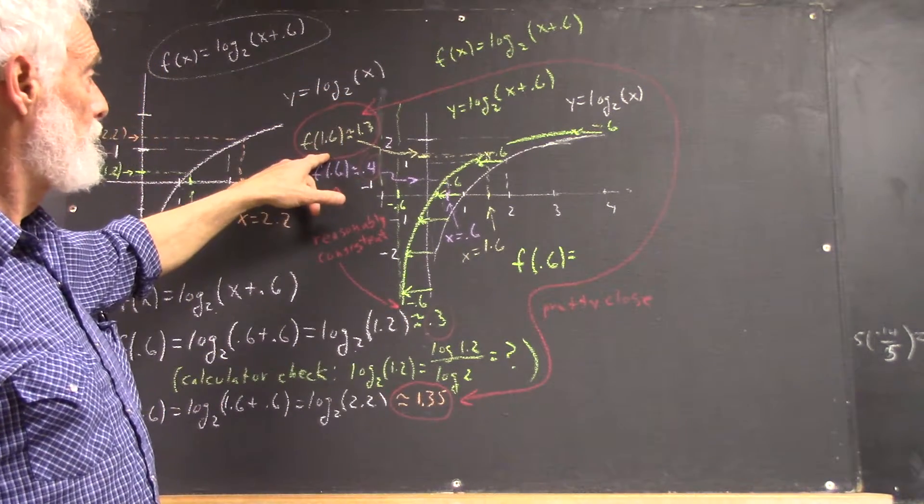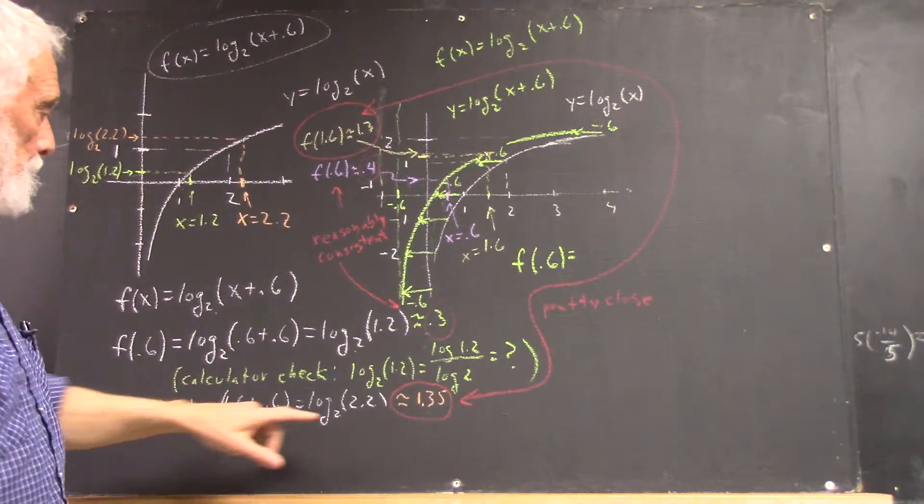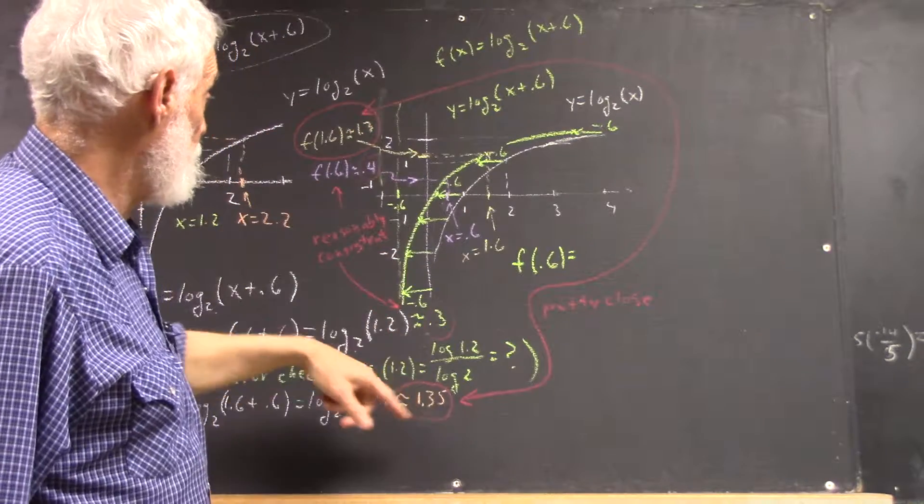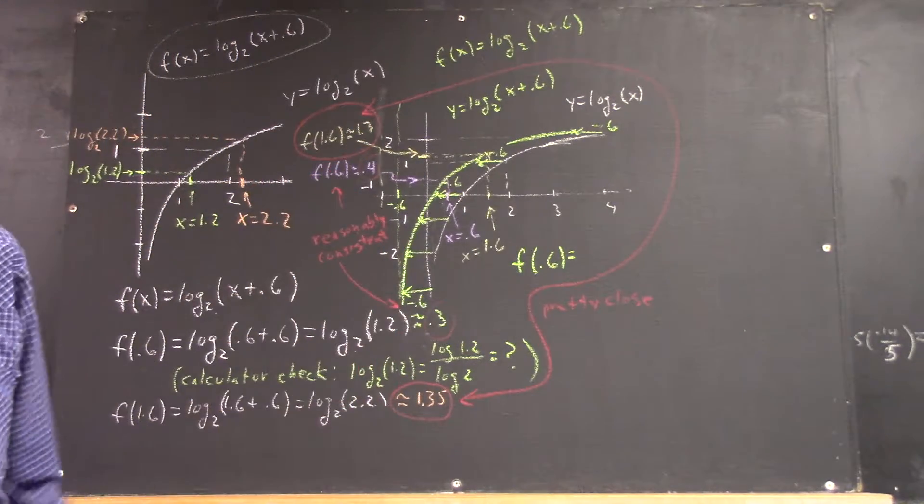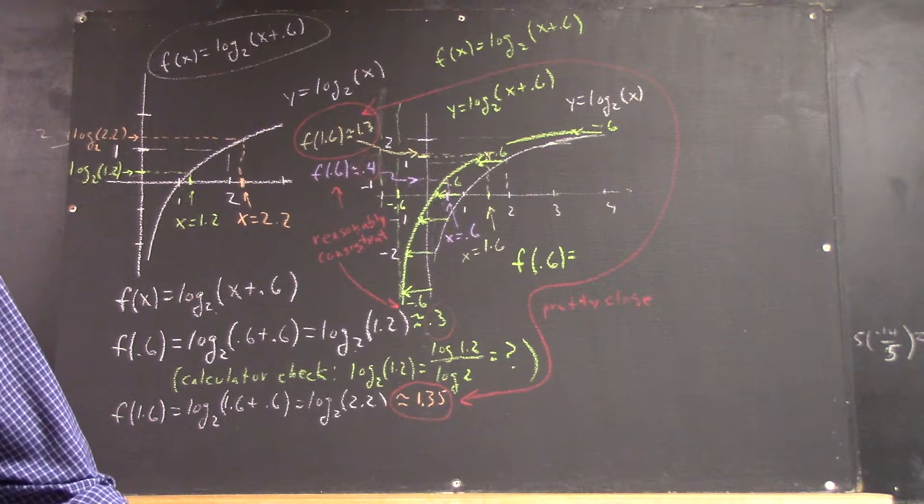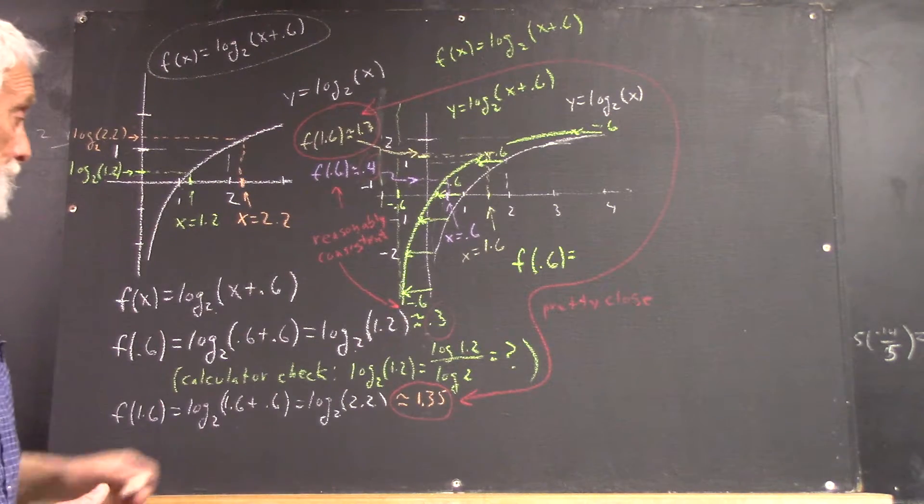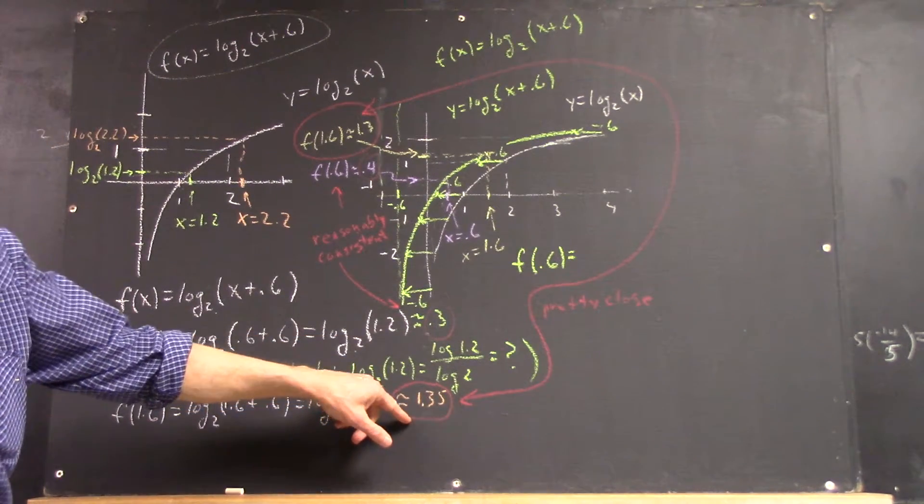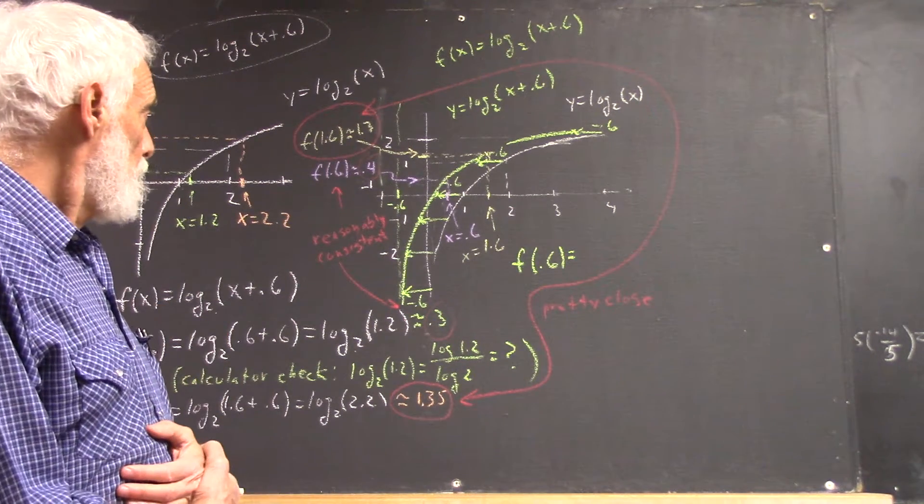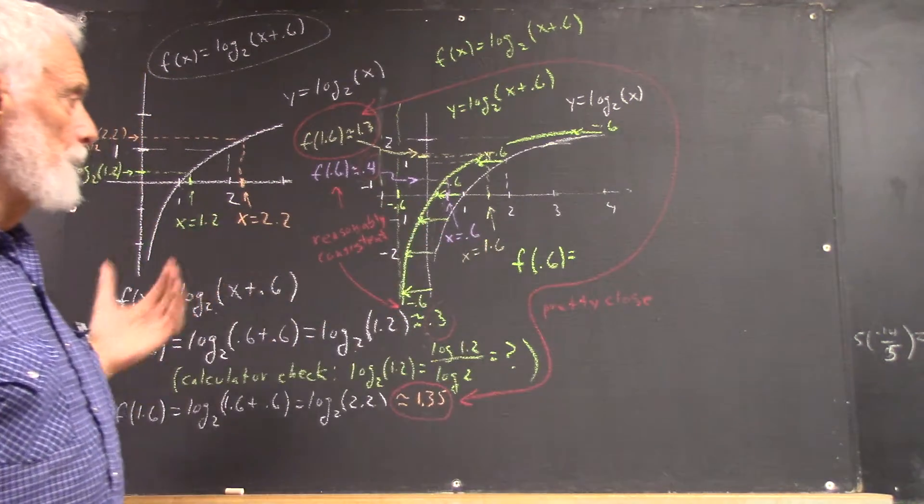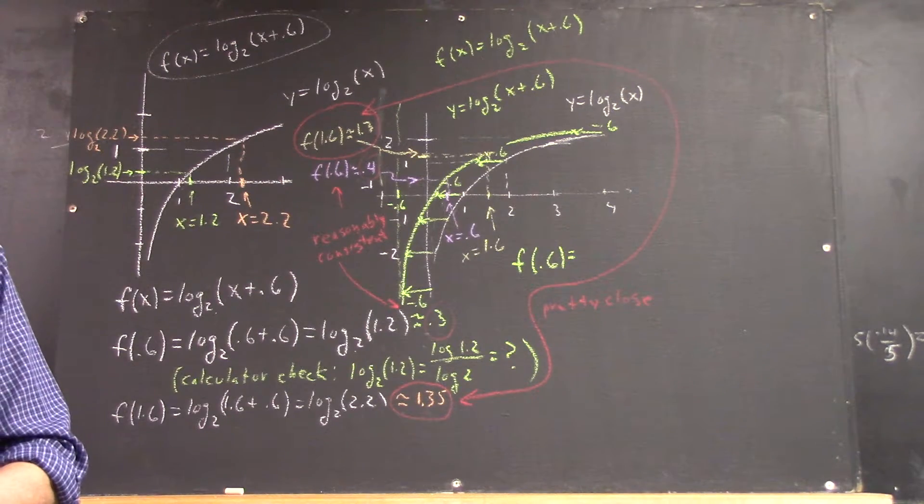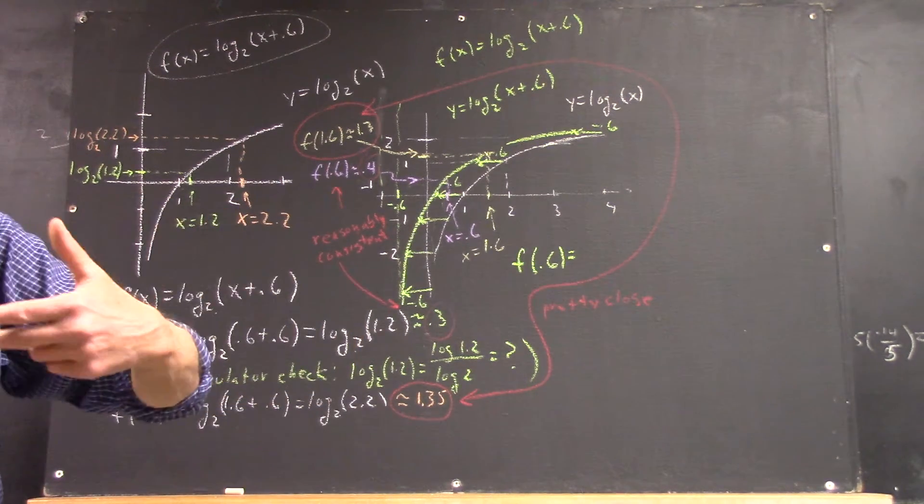Well, here I estimated, for f of 1.6, here f of 1.6 was 1.35. So that's pretty close. These two estimates are pretty close. These two are also pretty close. They're within 0.1. But you can take your calculator and figure out how close they are. Just evaluate like we evaluated this one and see what they should have been. And then think about how the two graphs compare, the shifted graph and the original graph, and why they give you the same result, because you've shifted 0.6 units to the left.